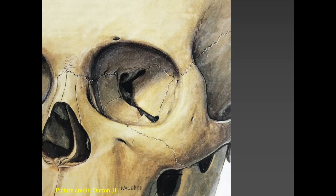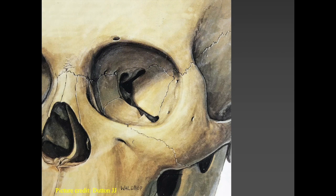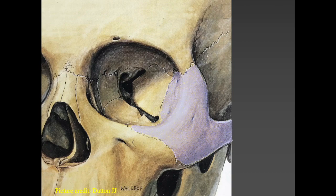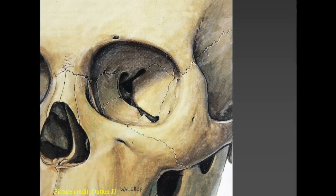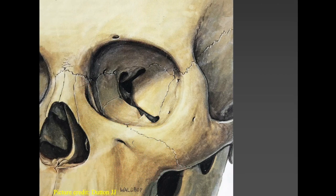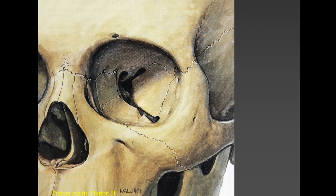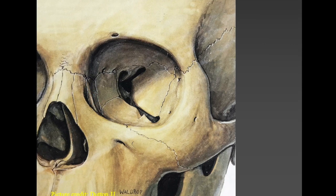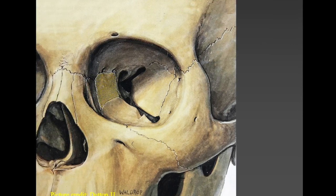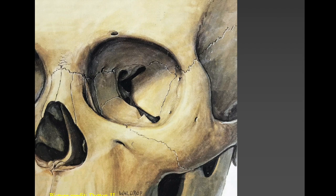Looking at the bony anatomy, we have the frontal bone covering the entire roof of the orbit, the zygoma laterally and inferolaterally, the maxilla forming most of the floor, the orbital rim and part of the lacrimal fossa, the greater wing of sphenoid forming the lateral wall, the lacrimal bone contributing partly to the lacrimal fossa, and the ethmoids forming the medial wall. A very small part of the palatine bone also contributes to the floor of the orbit.